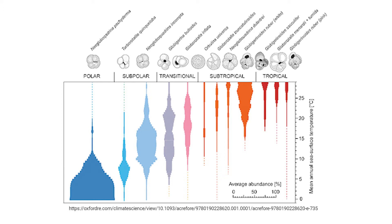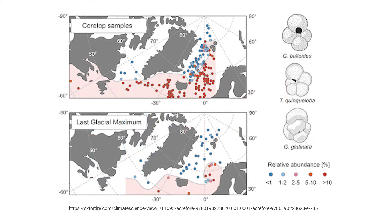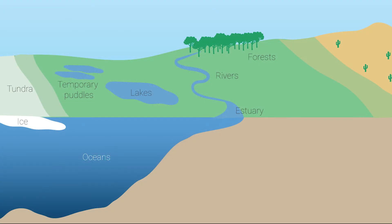Foraminifera can be either planktonic or benthic. Planktonic foraminifera live suspended in the water column and are especially sensitive to changes in ocean temperatures. These foraminifera are instrumental in recording glacial-interglacial climate changes over hundreds of thousands of years. Benthic foraminifera live on the seafloor or within the seafloor sediments, and their fossils are very common in the sediments of shallow ocean depths.